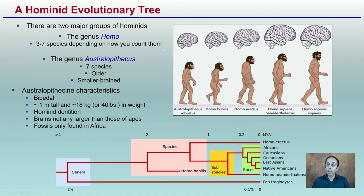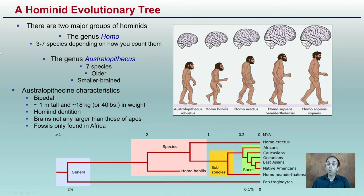You can see the brain size is different as well as the general structure and size of the individual on average. We can see the genus, the species, and subdivisions — getting more specific as we break this apart. Fossils for Australopithecus are only found in Africa, and their brains are not any larger than those of apes.